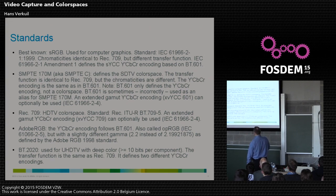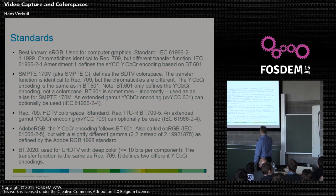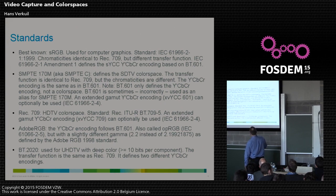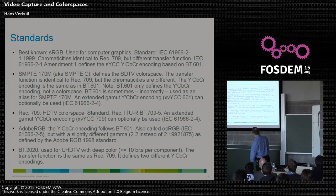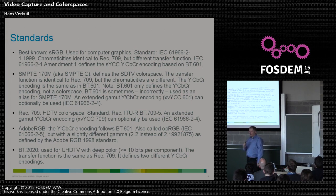Standard definition color space — for PAL and SECAM TVs, also called SMPTE-C — has the same transfer function as high definition but slightly different chromaticities. How to encode from RGB to YCbCr is standardized by the BT.601 standard, which many working in video have heard of. BT.601 just defines the RGB-to-YCbCr encoding — it is NOT a color space. It says nothing about the chromaticities.